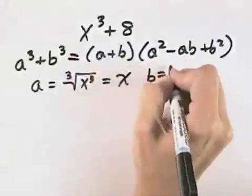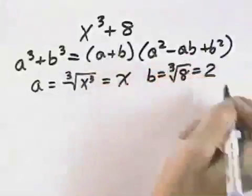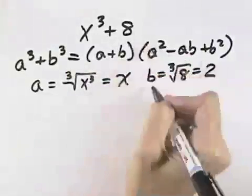b is the same way, the cube root of 8, which means it's 2, because 2 times 2 times 2 is 8, so b will be 2.